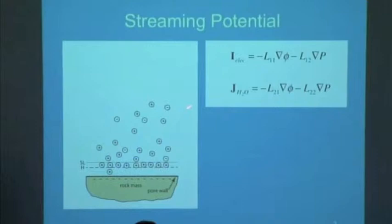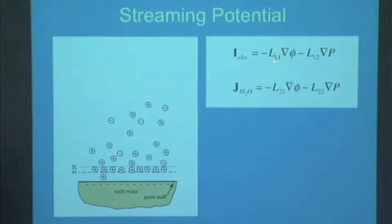We'll take one example, basically streaming potential. In this case, you've got the driving forces or pressure gradients. There can also be an electric gradient. This will cause electric current flow, and the pressure gradient will cause water to flow. You could also have water flowing because of an electric gradient.